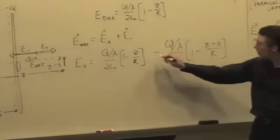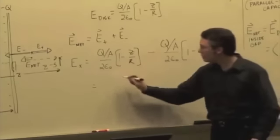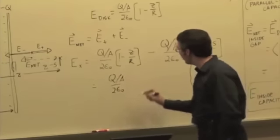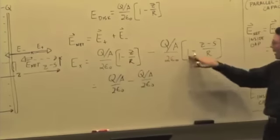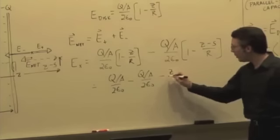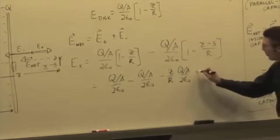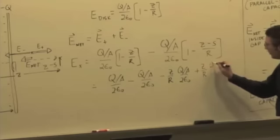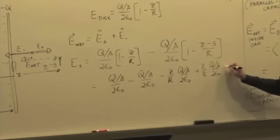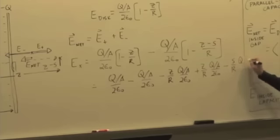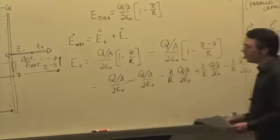And if you work this out, we're going to get some things canceling out. The q over a over 2 epsilon 0 minus q over a over 2 epsilon 0. So essentially that factor of 1 and minus that factor of 1. We have minus z over r, q over a over 2 epsilon 0. If we bring the negative sign inside, we have a plus z over r, q over a over 2 epsilon 0. And we end up with a minus s over r, q over a over 2 epsilon 0 when we work out all the algebra. So a lot of things cancel out. That cancels out. That cancels out. So we end up with the x component.